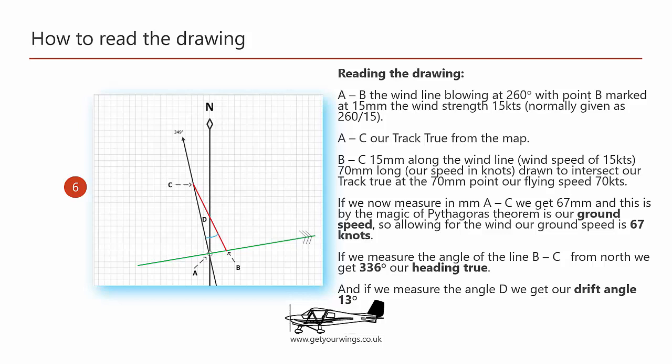If we measure the angle B to C we will get our heading true of 336 degrees, the heading that we will need to fly in the air to offset the wind. And the drift angle we can calculate by measuring angle D which is 13 degrees. If we add the 13 degrees onto our heading true we'll get our true track that we started with.